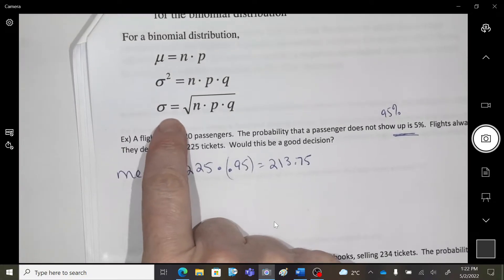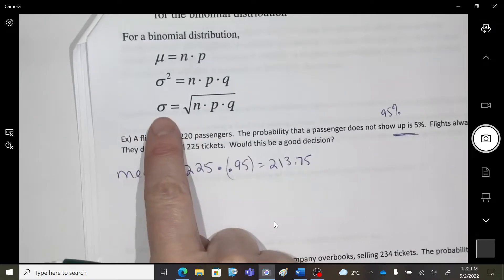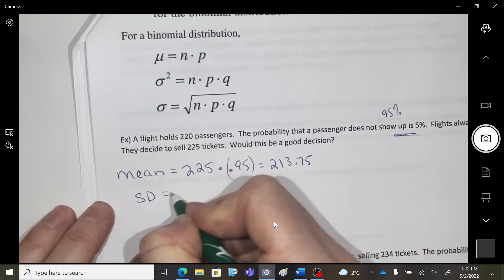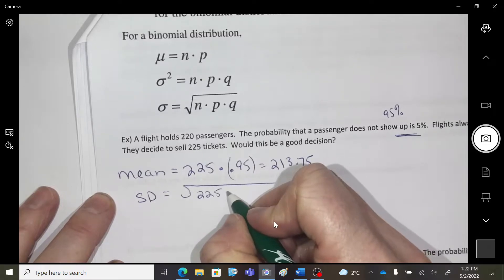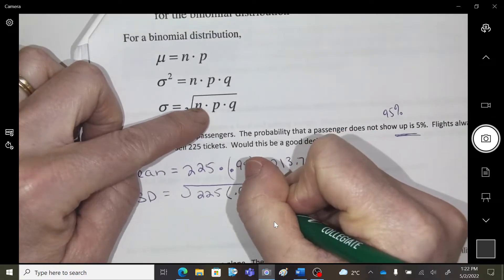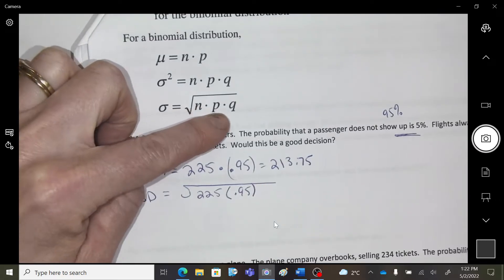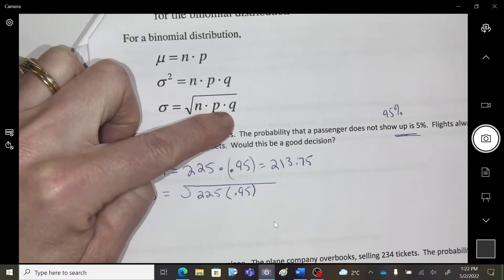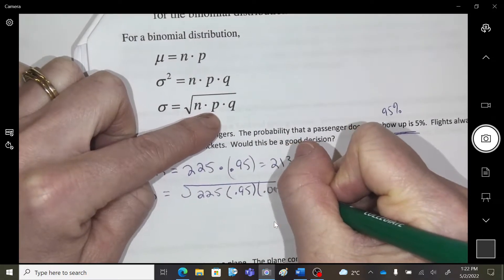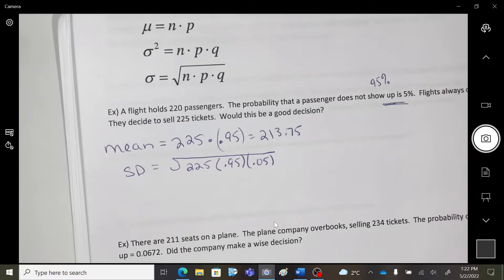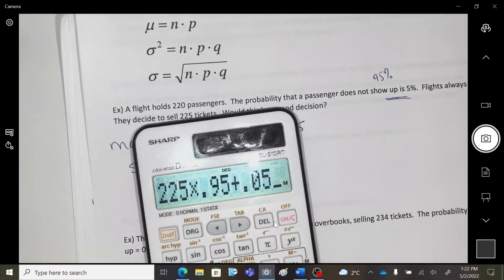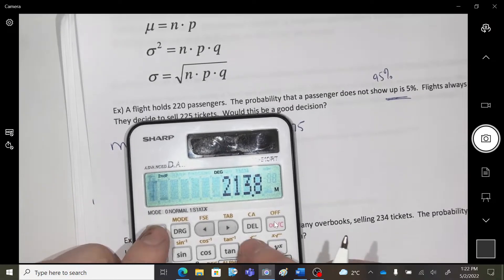Standard deviation. So that's this last one. This one's variance. So this one, the standard deviation, is the square root of N. So 225 tickets times the probability, 0.95, times the Q, which is the not probability. So if this was 95%, this is 5%. Okay, so that's the P and the Q, the probability of doing it versus not doing it, the P and the Q. Okay, be careful that that is a 0.05, right?